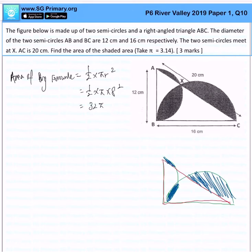I will calculate the value later. So the area of the smaller semicircle, that is half times pi r squared as well, but the radius in this case is 6 cm, and that will be 18 pi.